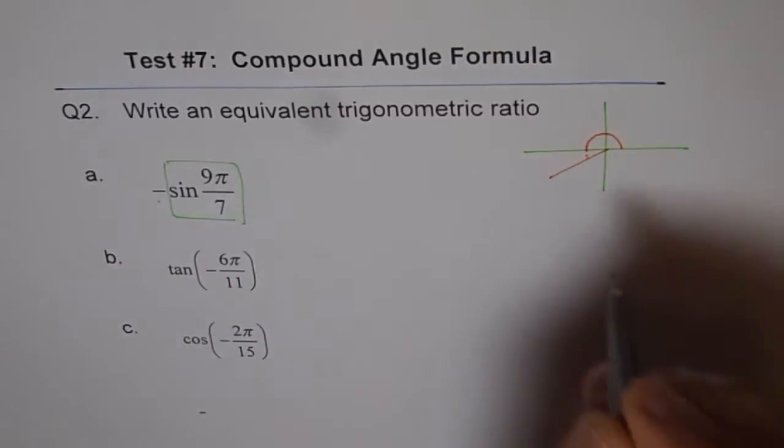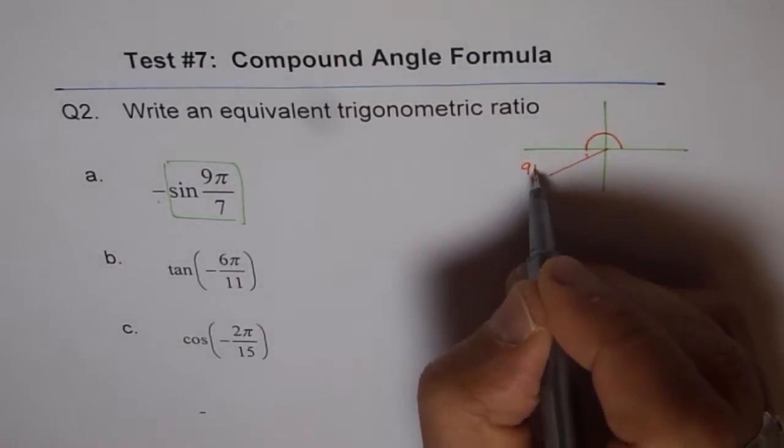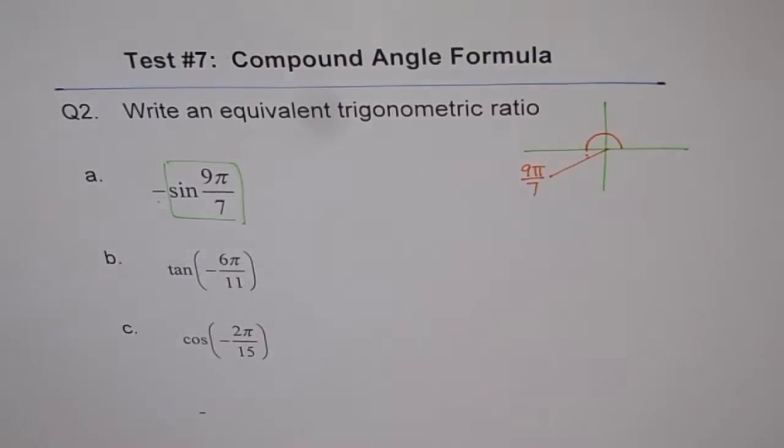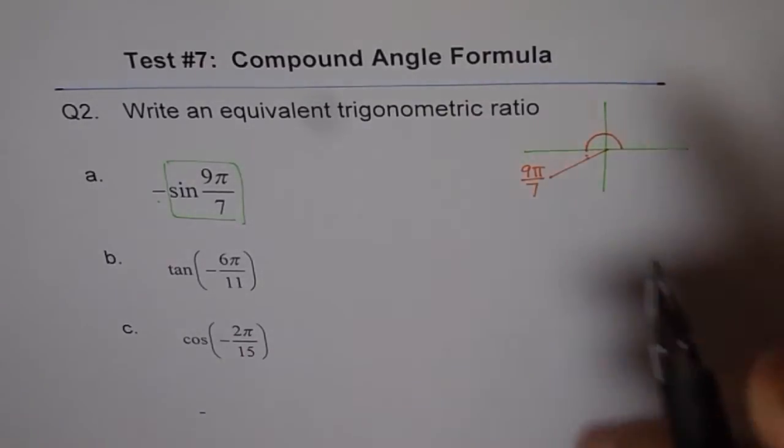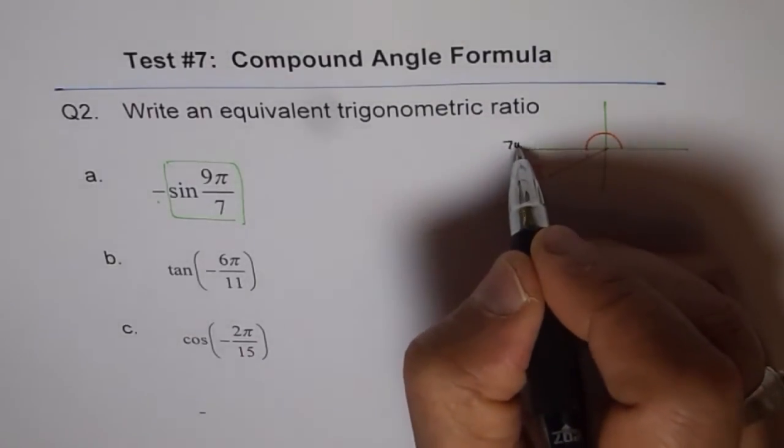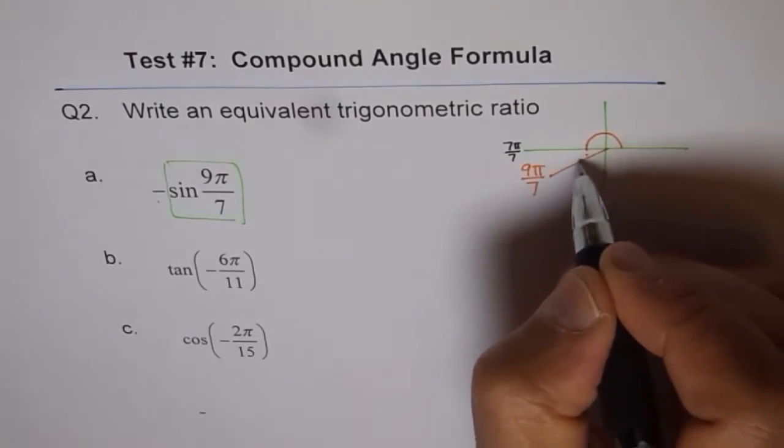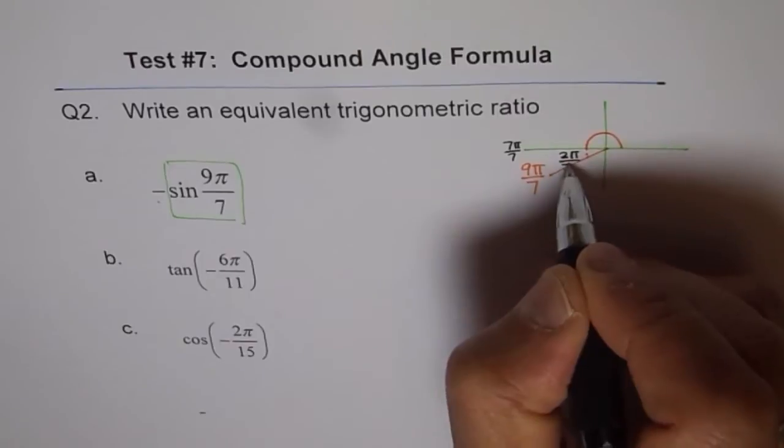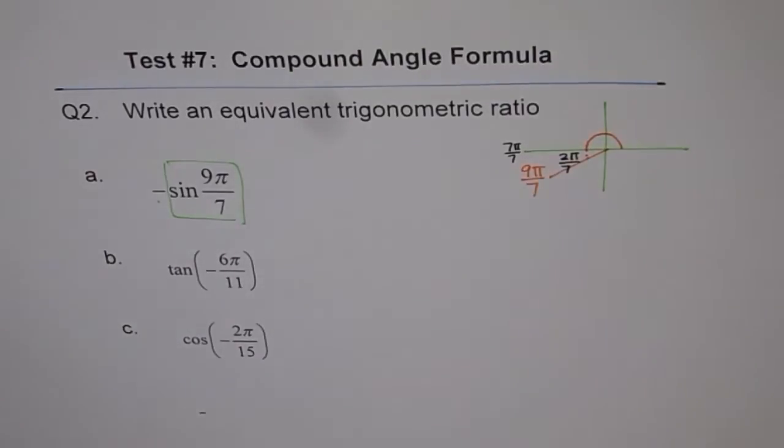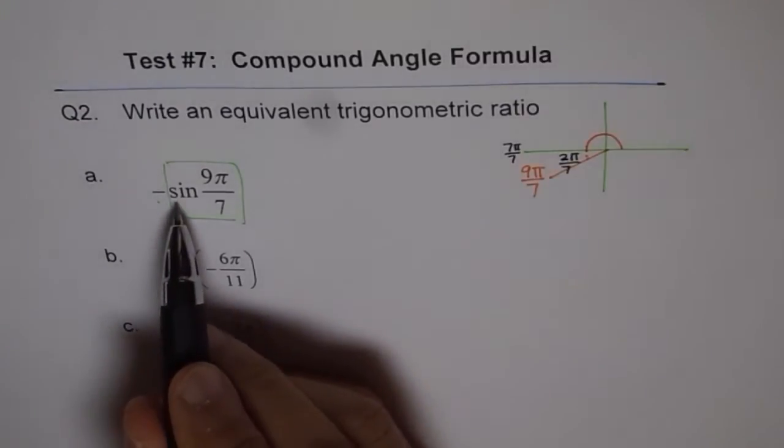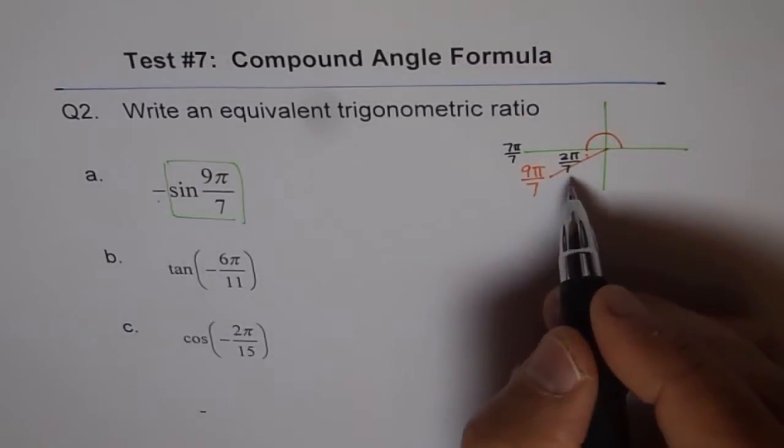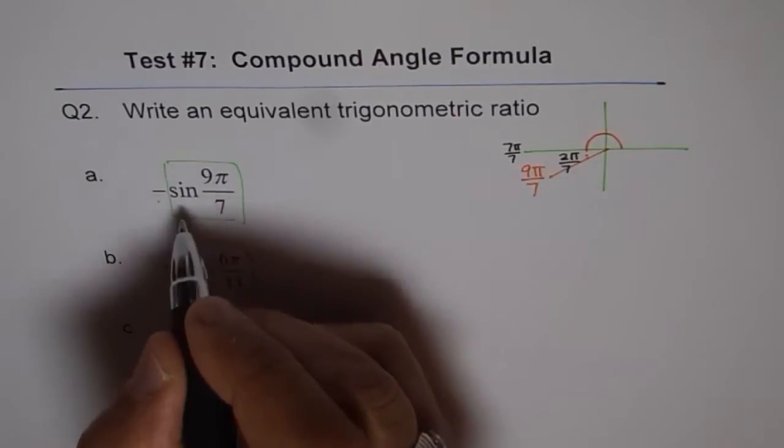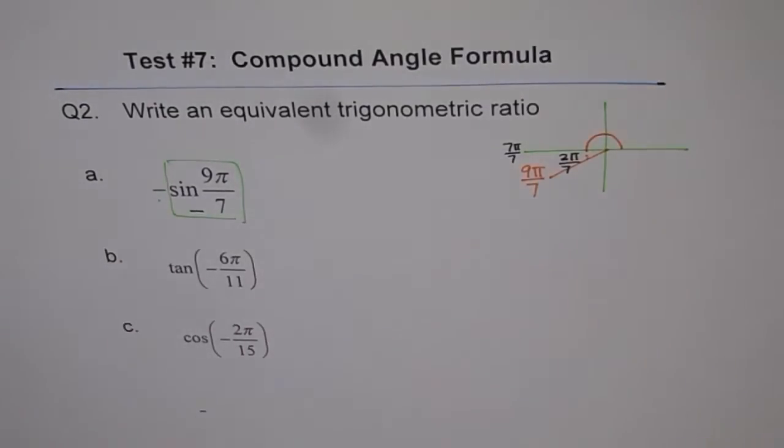So this is 9π by 7. What you really did was that this is 7π by 7, that is pi. And you did 2 more. That means your related acute angle is 2π by 7. Now if you are talking about sine and if you are in quadrant 3, that means negative value. So this value is negative.